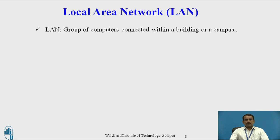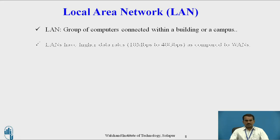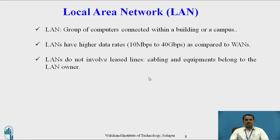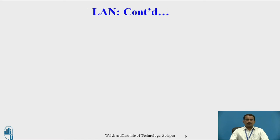Local Area Network. A group of computers connected within a building, within a campus, or in a home is called a Local Area Network. It can cover one home, city, building, or office. LANs have a higher data rate compared to WAN — from 100 Mbps to 40 Gbps. LANs do not involve leased lines.